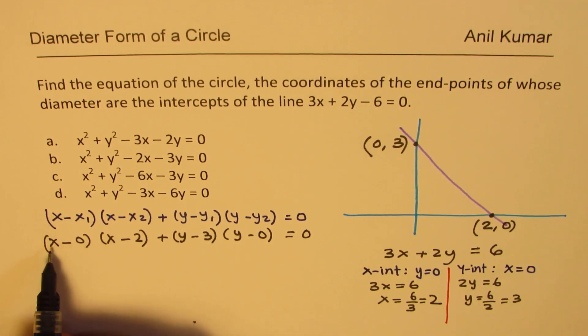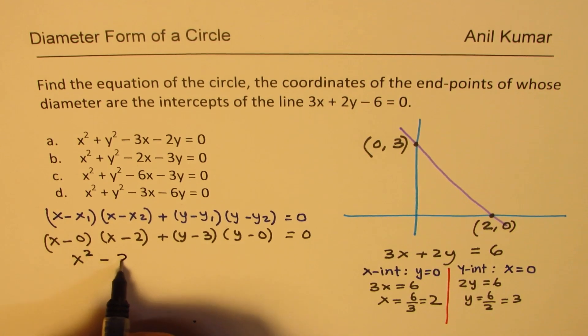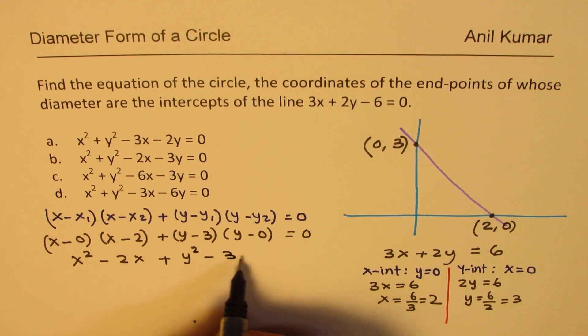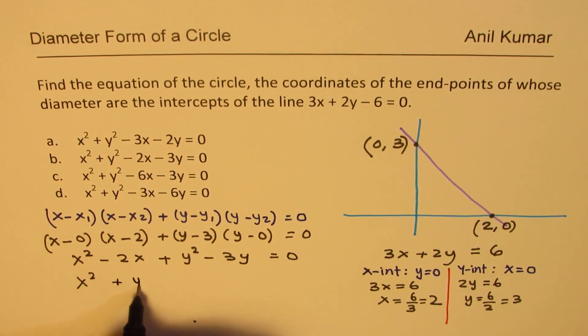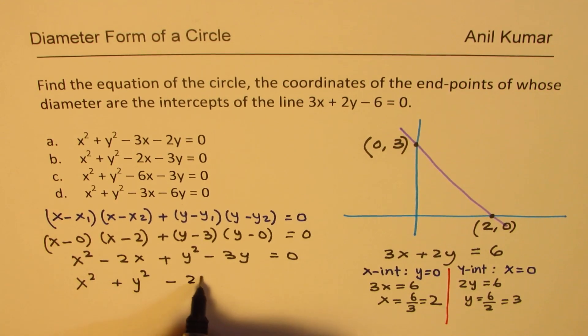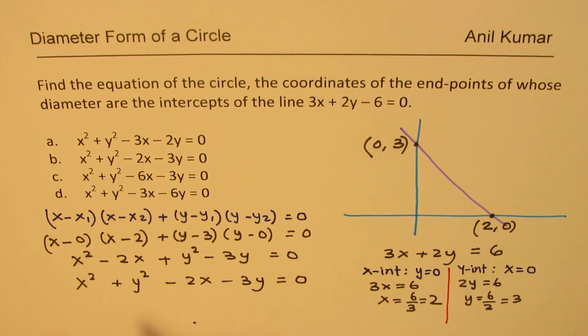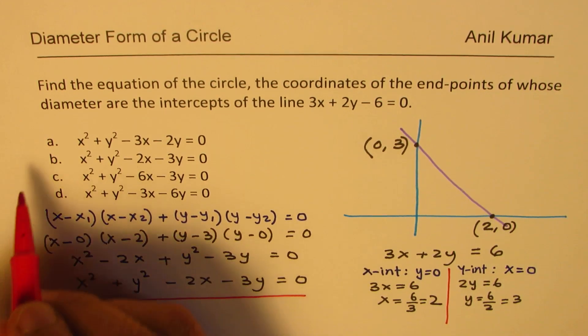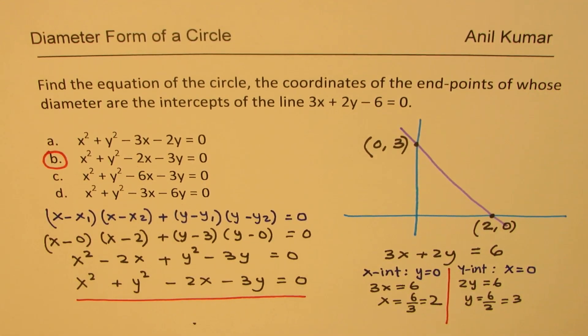So that means let's multiply: this is x times (x minus 2). So we get x squared minus 2x plus y squared minus 3y equals to 0. Perfect. So you get your equation and now you can match it with option B. So that becomes the solution of the given question. Now I hope you find it interesting and useful.